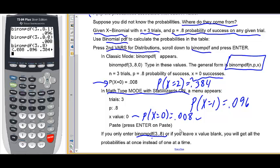So, just like that. Binomial pdf 3.8. It gives all the probabilities. You do have to scroll to the right to pick up the last one there. There it is .512. Alright.